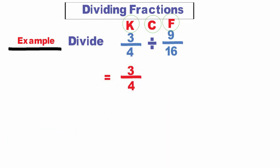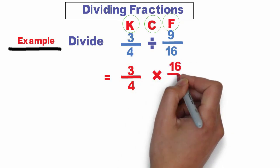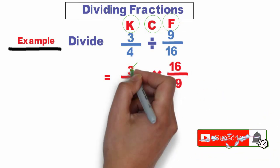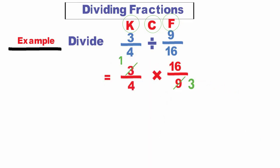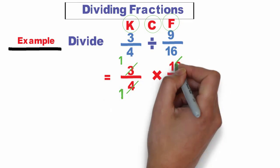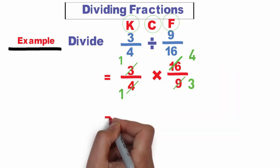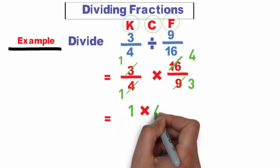It will be 3 over 4. Change the sign of division to multiply. Flip the second fraction to be 16 over 9. Now cancel out the common factors: divided by 3 equals 1, divided by 3 equals 3, divided by 4 equals 1, divided by 4 equals 4.